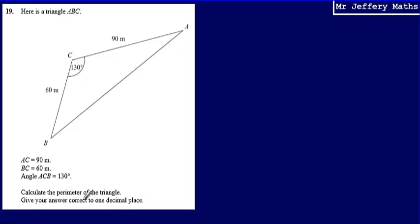So to work out the perimeter of the triangle, I'm going to need to work out the length of this side here. Now, in order to do this, what I can see is I'm working out a missing length on a non-right-angled triangle. And so to do this, I'm going to need to either use the sine rule or the cosine rule.